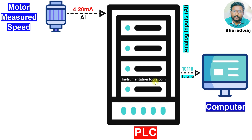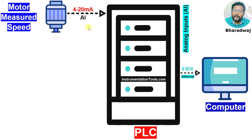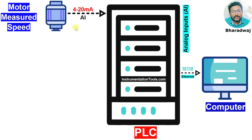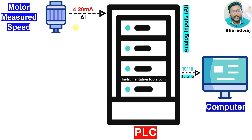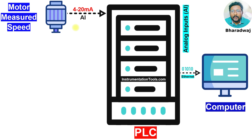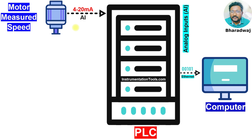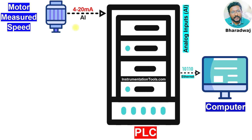You will receive the signal in 4 to 20 mA — it is AI, that means analog input to the PLC. Also, some other parameters related to the motor are power consumption, current value, voltage value, frequency value, etc. You can take these values from electrical feeders or variable frequency drives.